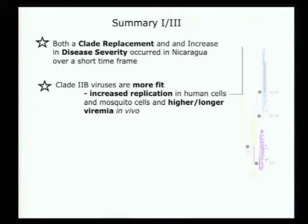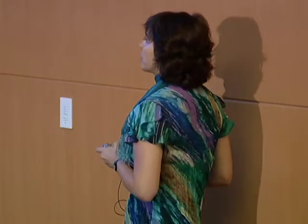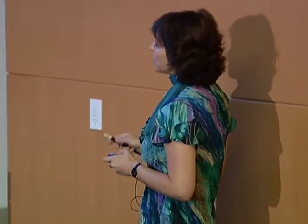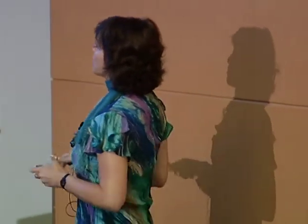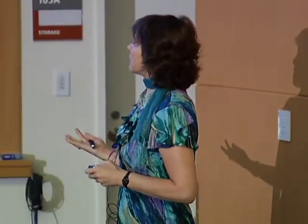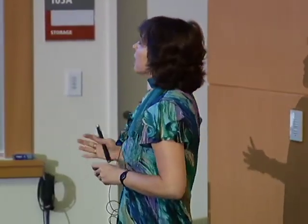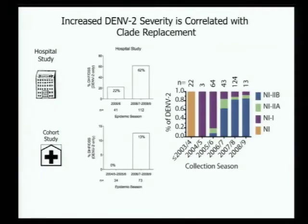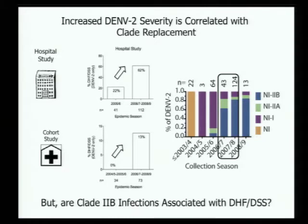The increased replication in human cells and mosquito cells in vitro correlates with higher and longer viremia in vivo. So now the question is: can the arrival of a more fit virus explain this increase in disease severity? We had this shift in the clade and this shift in severity — but it turns out the story is more complicated.